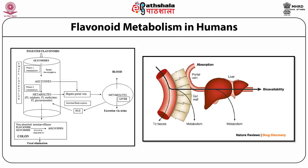Most nutraceutical compounds face this limitation: either they are not absorbed by the intestinal cells at all and pass directly out through Channel A, or they undergo premature metabolism. The left figure shows ingested flavonoids in glucosidic form entering the gut, where they undergo phase 1 metabolism — partial deconjugation into aglycones — followed by phase 2 metabolism involving sulfonation, methylation, and glucuronide conjugate formation. When these conjugates form, the flavonoids lose their bioactivity. However, these metabolites are still carried by the hepatic portal vein into the liver and circulated into the blood.